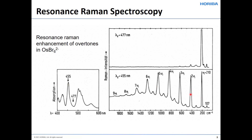But what a difference if we then excite at 455 nanometer light, which is coupling into this electronic transition. Now we see all of these overtones. This is an old publication from decades ago, which is why the spectrum is plotted from higher to lower wavenumber. At any rate, you see this ringing of two nu one, three nu one, four nu one, etc., because of the enhancement of these particular modes and their coupling with that electronic transition. This is a real good indication of resonance enhancement when one sees these overtones.